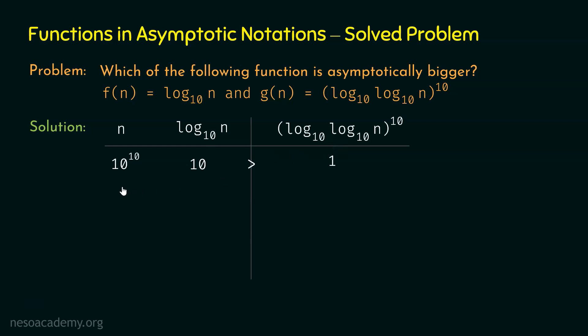Let's take an even bigger value of n — 10 to the power 100. If we replace n by 10^100, we get log(10^100) base 10, which equals 100. For g(n), log n base 10 is replaced by 100, which can be represented as 10^2, and log(10^2) base 10 is 2.